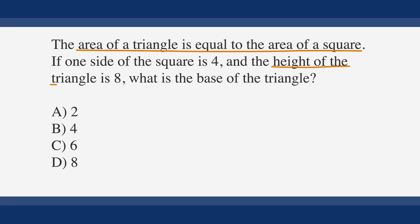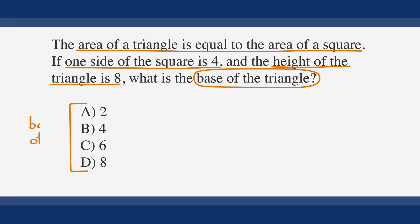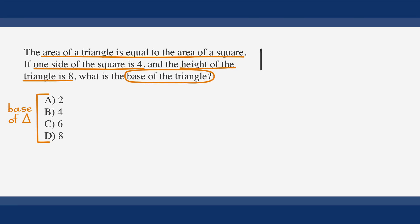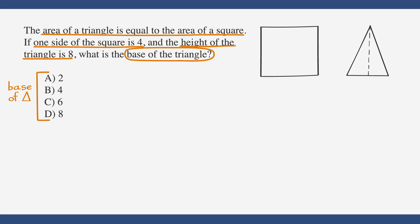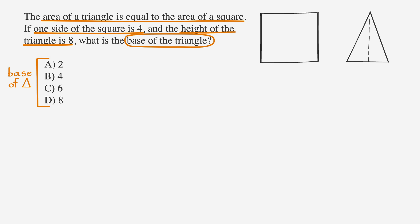Let's underline the facts, circle the key words, label the answer choices, and get to work. Since we have a geometry problem and no picture, we want to start by drawing a picture. In this case, we need a square and a triangle. The information we have is that one side of the square is 4 and that the height of the triangle is 8.